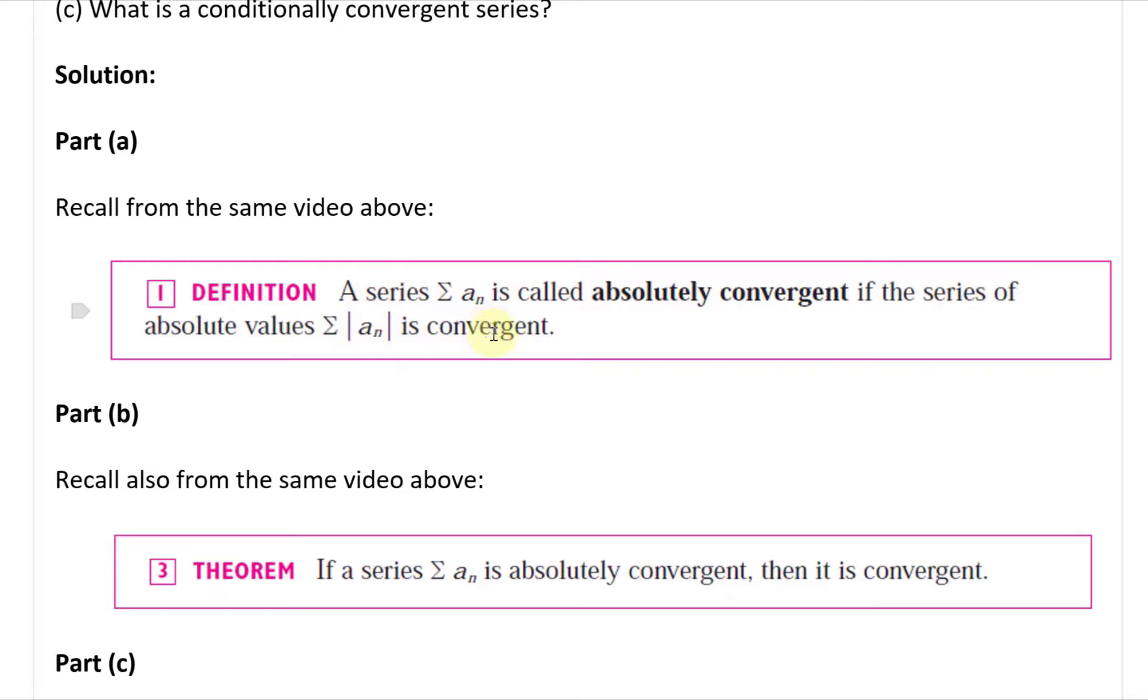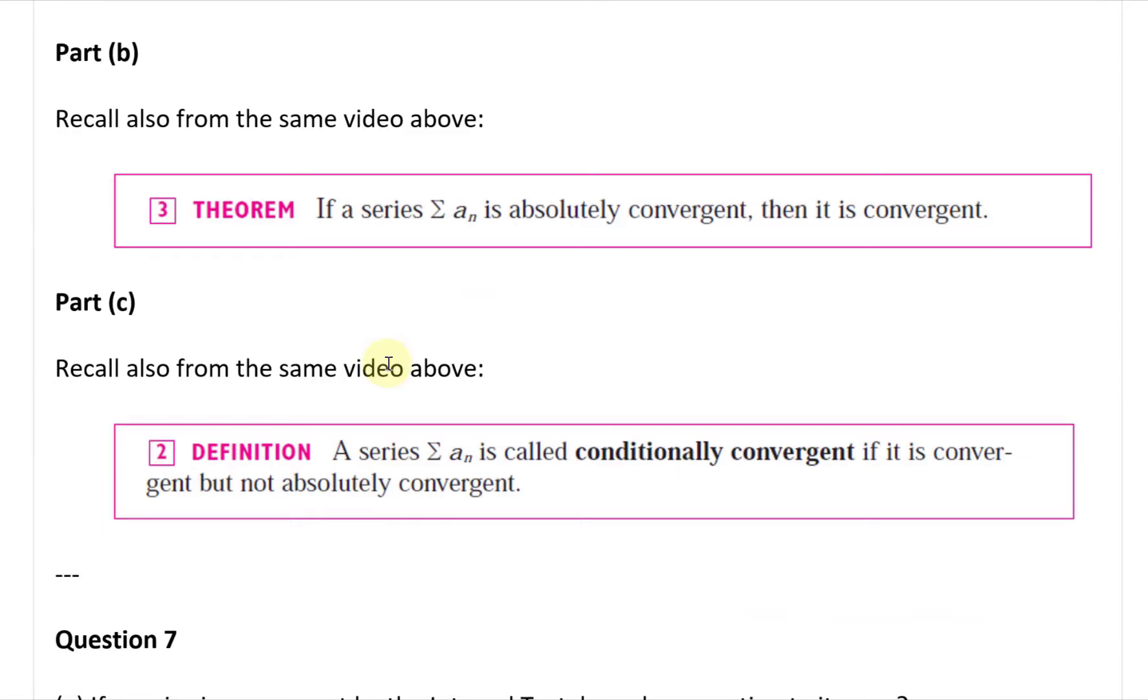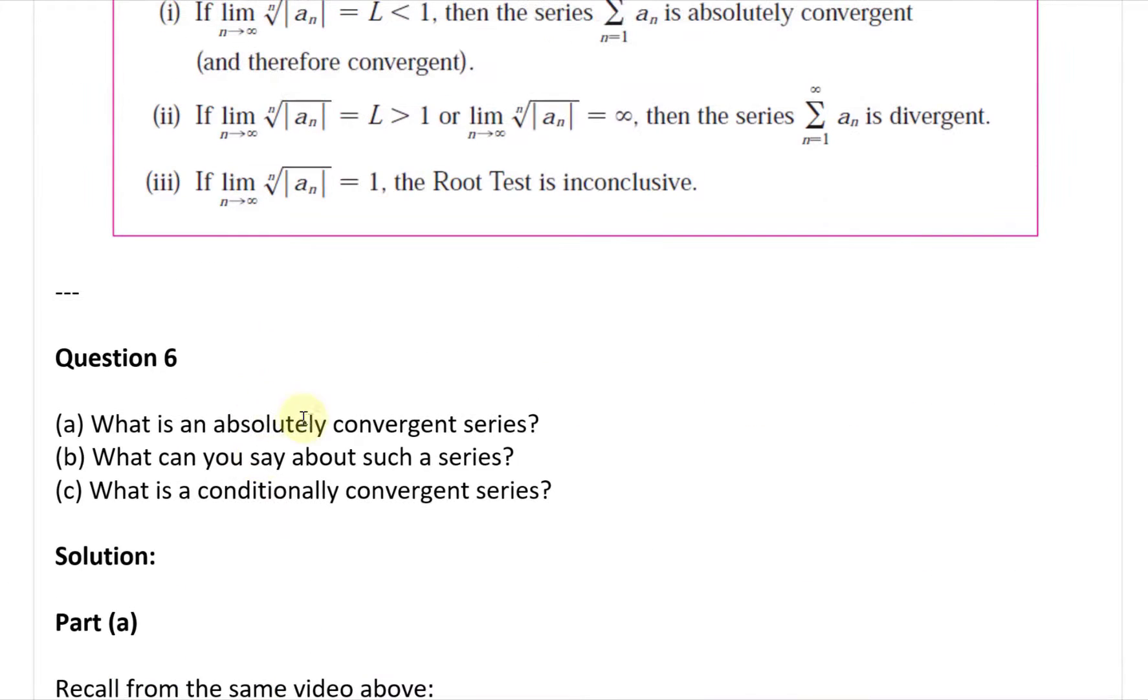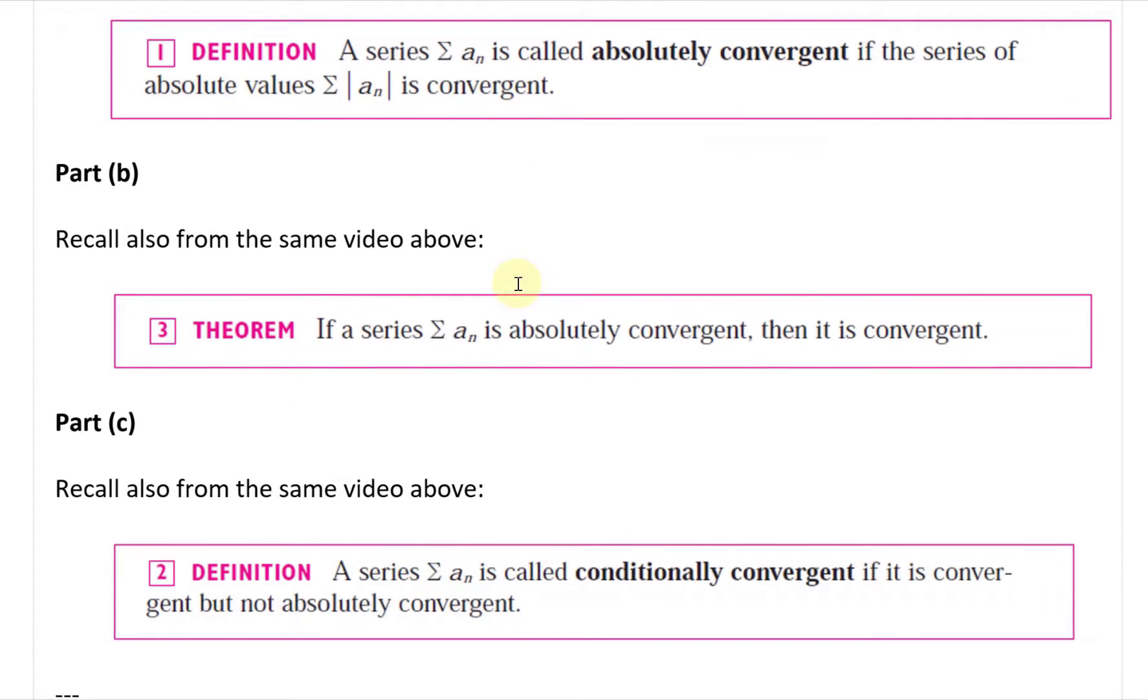So if this is convergent with absolute values, then this is also convergent. Part (c): what is a conditionally convergent series?